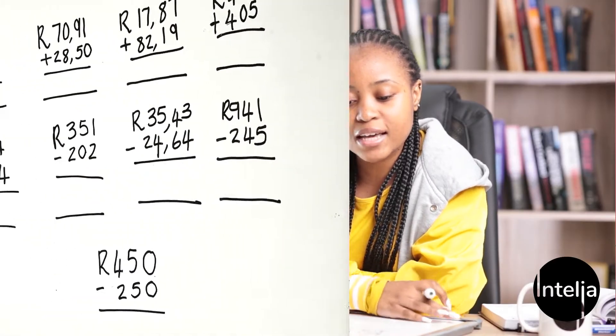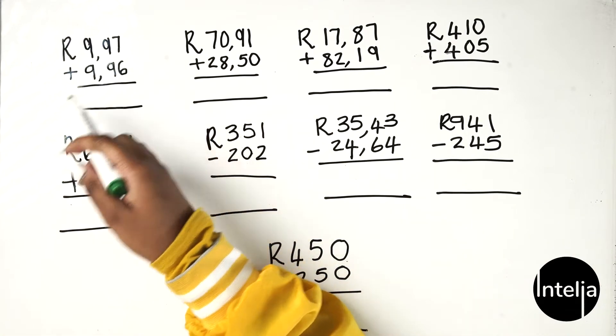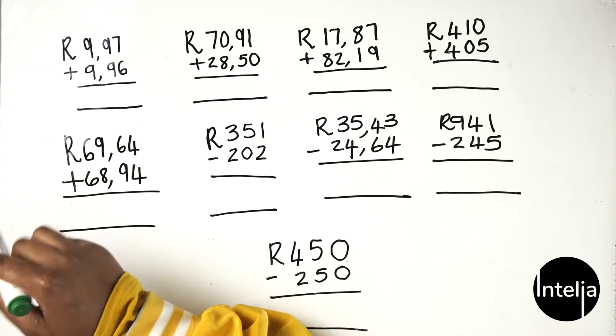Hi guys, welcome back! Today we're going to be learning how to add and subtract money values. We're going to use the same method as when we're just adding and subtracting regular numbers. I have a few exercises here. The first exercise: 9.99 cents plus 9.96 cents — you'd have to add the values because there's a plus sign. Don't forget your currency in rands.